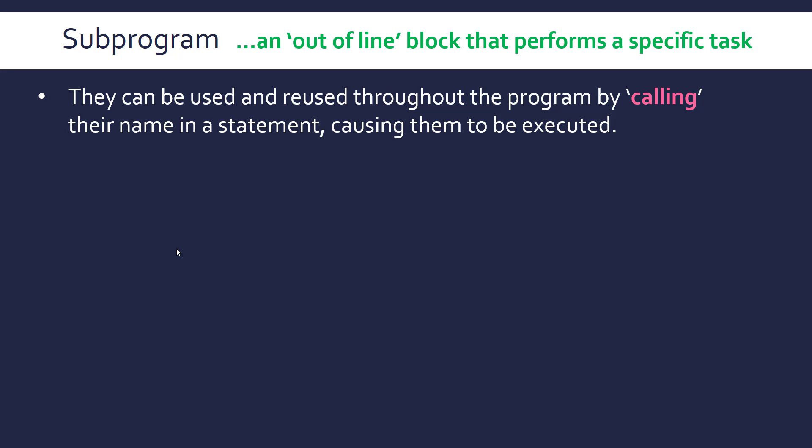They're defined usually at the start of code or in a different class. Effectively, they're in a unit, in a block that's separate to the main program, and they get called by just referring to their name. That's why they're out-of-line — they don't exist where you're using them; you refer to them and it jumps to their execution, execution being to run their code.